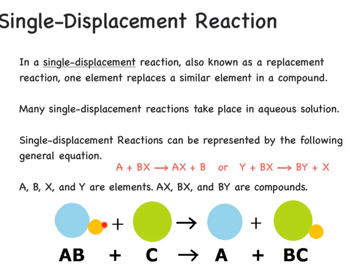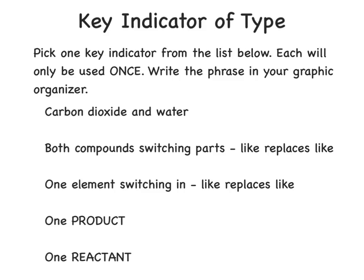A, B, X, and Y are elements, whereas BX and BY are compounds. Which of these key indicators best fits a single replacement reaction? One element switching in — like replaces like — is correct.